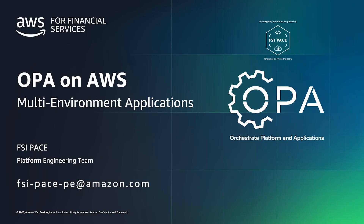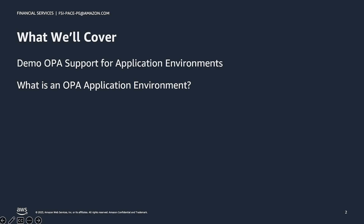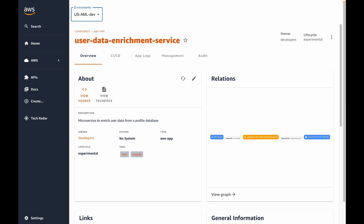Hello and welcome to part 4 in the OPA on AWS video series. I'm Anthony Watson, an AWS Prototype Architect, and in this segment I'll show you how OPA supports applications that run in more than one environment. I'll start by demonstrating the developer experience for an application that needs to run in more than one environment. Afterwards, I'll explain what makes up an environment on OPA and examine how an OPA environment compares to a traditional one. Let's see how developers can set up their application to run on a new environment.